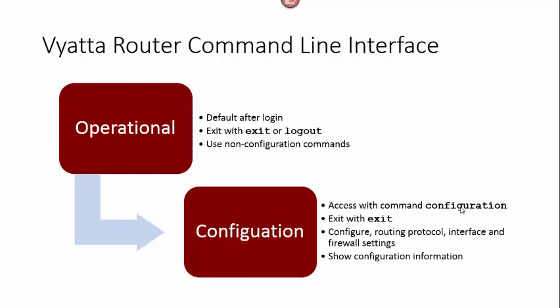To exit configuration mode, enter the command exit. In operational mode, you can enter any non-configuration command — for example, the entire list of show commands, save, power off, or reboot. In configuration mode, you can do many of those operational commands but not all of them.